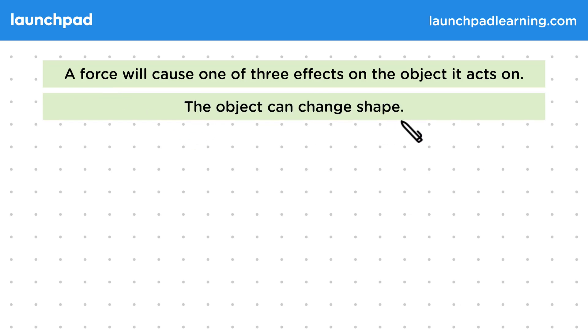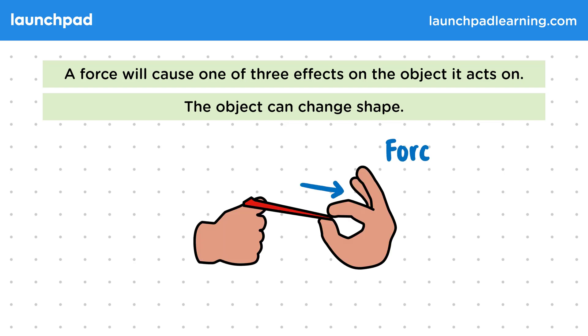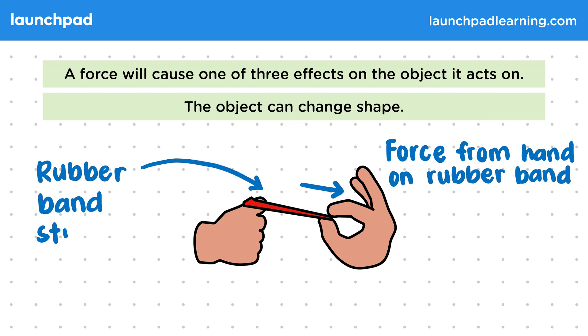So the object could change shape. Consider stretching a rubber band. The force from the hand causes the rubber band to change shape, so the band is stretched. When a force causes an object to change shape, this could also include things like bending, breaking, or squashing the object.